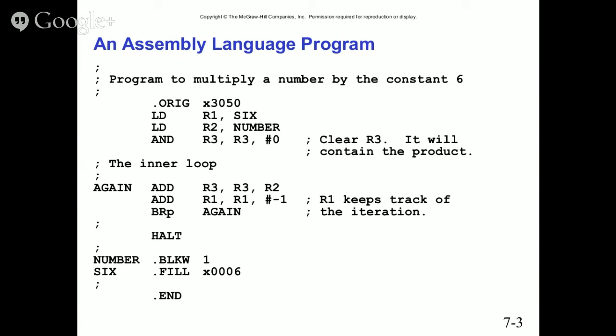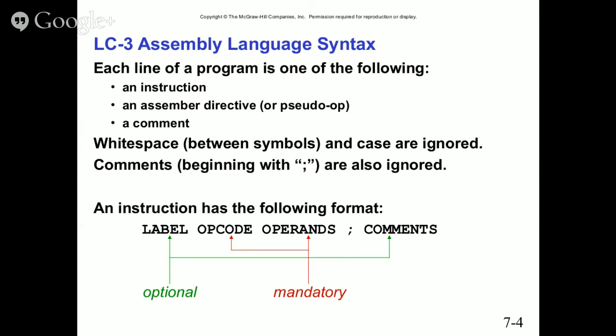Here's an example of an assembly program. The semicolon is used for comments — that's how you write comments in assembly. In Python it's the pound sign, in C++ it's two forward slashes. There are different methods for comments, even in batch scripting. This example shows how an assembly language program looks very different from what we've discussed with Python.